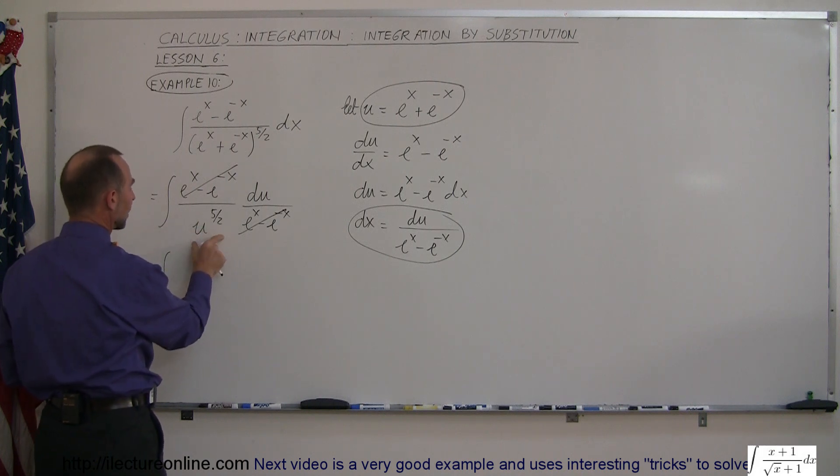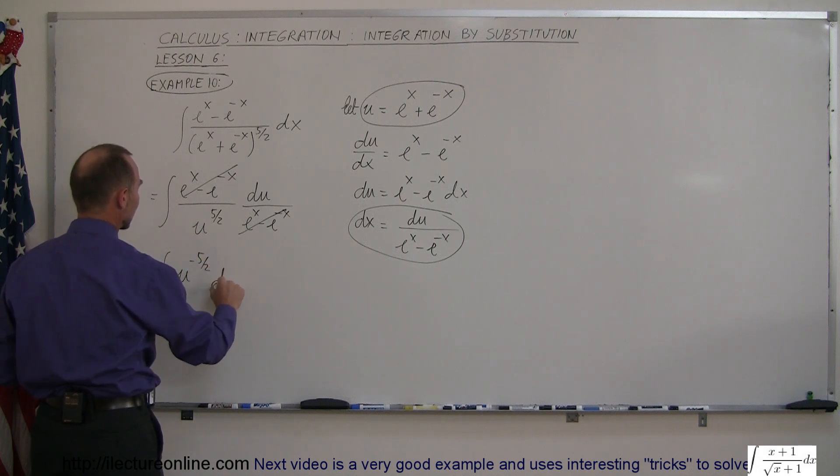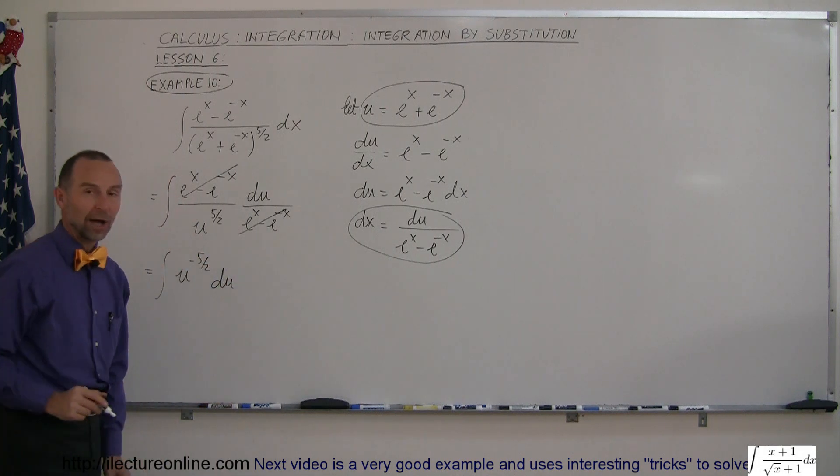And we now have the integral of u to the five halves in the denominator can move to the numerator as u to the minus five halves times du and this I know how to integrate.